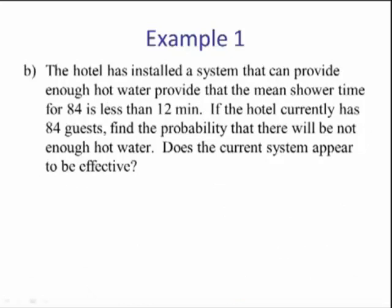Part B. The hotel has installed a system that can provide enough hot water provided that the mean shower time for 84 is less than 12 minutes. If the hotel currently has 84 guests, find the probability that there will not be enough hot water. Does the current system appear to be effective?